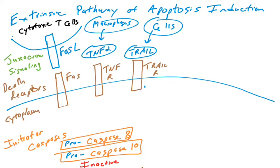Another example is a molecule called TRAIL, which binds to the TRAIL receptor. TRAIL can come from any number of cells, and the TRAIL receptor can be found on a number of different cells. As long as you appreciate that cells can secrete molecules that bind to receptors on the surface of another cell, signaling for that cell to undergo apoptosis, that's an example of the extrinsic pathway. This is paracrine signaling — one cell releasing a soluble molecule locally to tell another cell to undergo apoptosis.